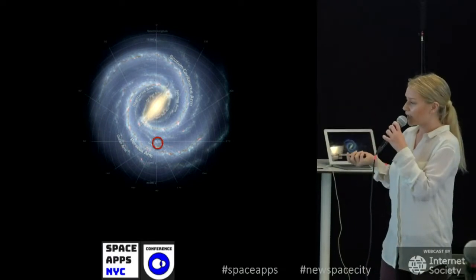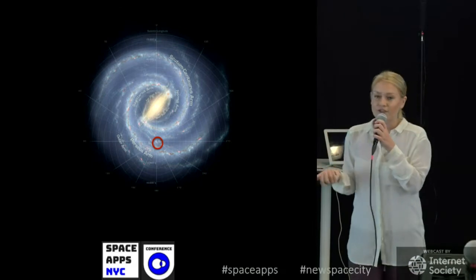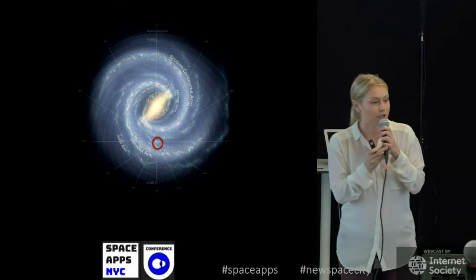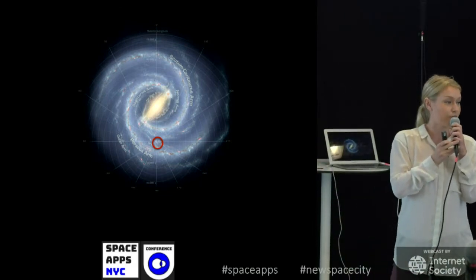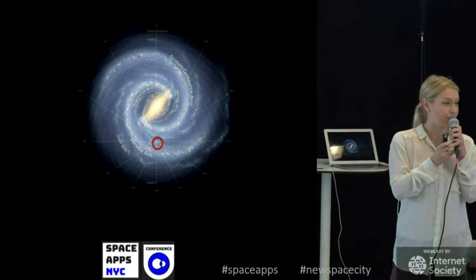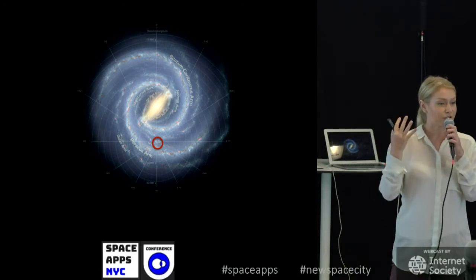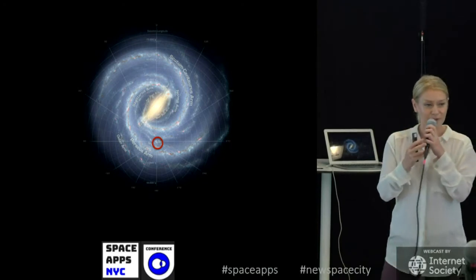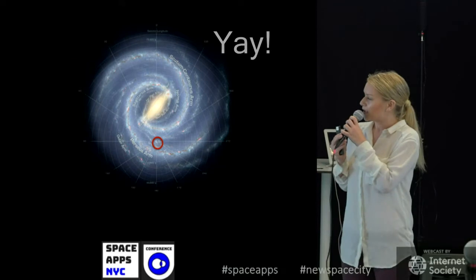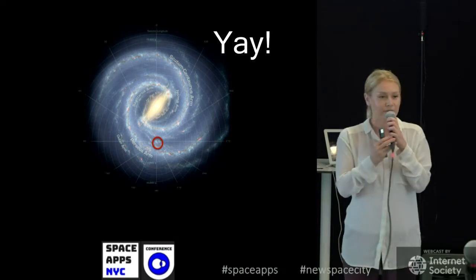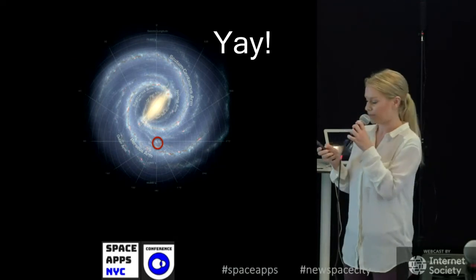What you should take away from this talk is that the sun is just one of billions of stars in our own galaxy. Our star, the sun, is just a lot closer to us — that's why it looks a little different than all the stars. But it's just one out of many, many stars in our own galaxy.